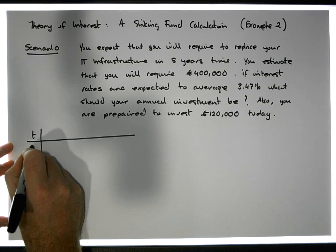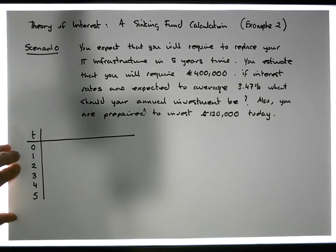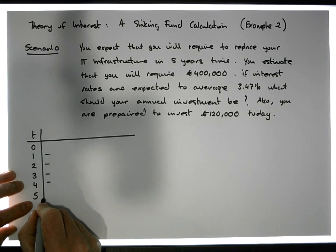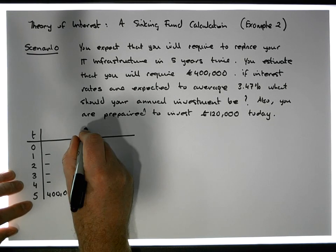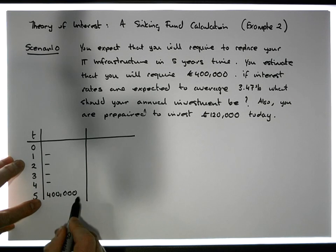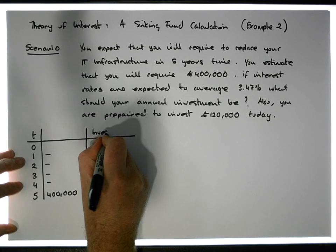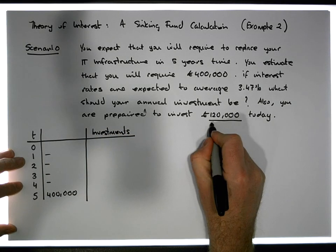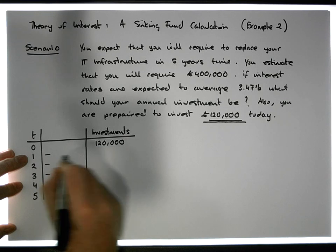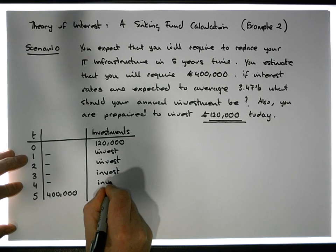Time t=0 means today; t=1 means one year has elapsed; t=2, two years; and so on up to t=5, five years elapsed. In five years' time you require 400,000 euros. The question is: what should each of these annual investments be so that you can cover the liability of 400,000 euros? Today you are prepared to invest 120,000 euros.